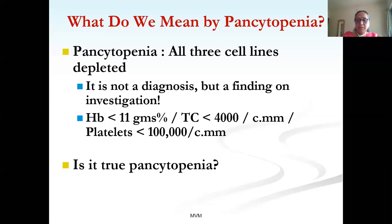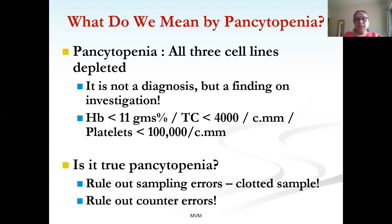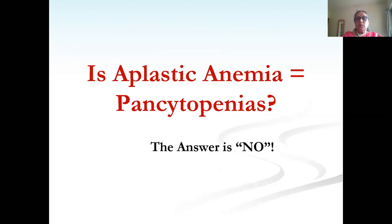Pre-collection errors and pre-analytical errors should be kept in mind — how was the blood collected, was there enough anticoagulant in the tube? Clotted samples can give you pancytopenia which is not true. Sometimes the counter can give errors where there are no cytopenias but because of microclots or computation errors you may get a wrong report. Always verify if the patient is clinically not fitting into it.